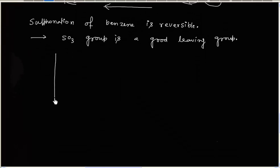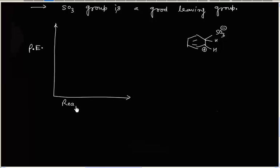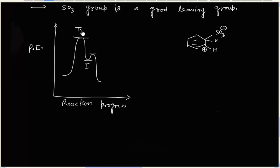Let us show the potential energy diagram for this reaction. The reaction has two steps and one intermediate — the sigma complex. On the y-axis we have potential energy, and on the x-axis we have reaction progress. There are two transition states. The first step is the slow step, so it has high activation energy; the second step is the fast step, so it has low activation energy.